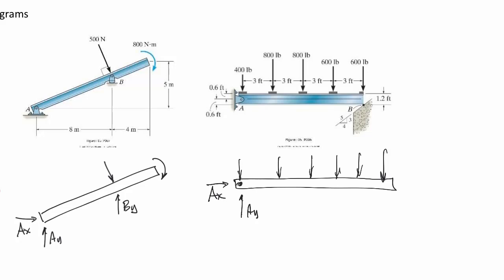The support at B here is a frictionless support, so it's going to be perpendicular to the contact surface, but it will have two components. This will be B, and whatever this angle theta is, this will be B cosθ and B sinθ.